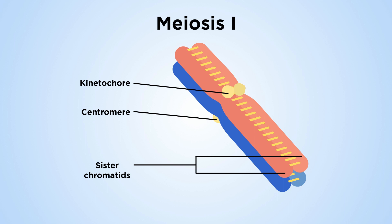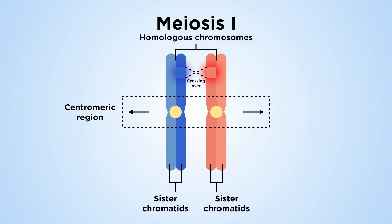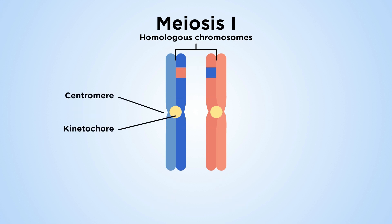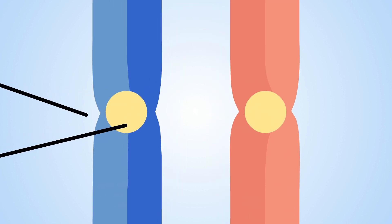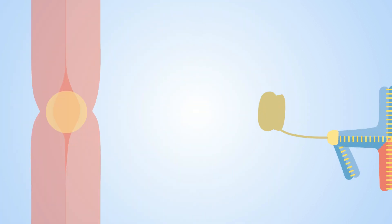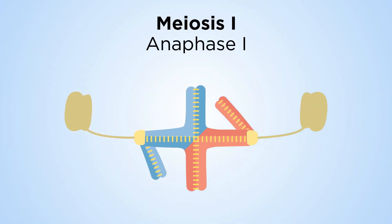In meiosis I, two pairs of sister chromatids are linked together to form bivalents. They are held together as a result of sister chromatid cohesion along chromosome arms and the presence of one or more crossovers between the two homologous chromosomes. Sister kinetochores in each bivalent are seemingly fused together, and sister chromatids appear to share a single, fused kinetochore.